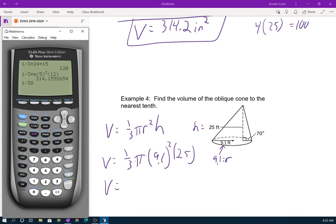One third times pi times 9.1 squared. Oh, man. I'm just going to start this over. I somehow got that messed up. One third times pi times 9.1 squared times 25. 2167.96. So that 0.9 will actually make that round up to 2,198.0 feet cubed.